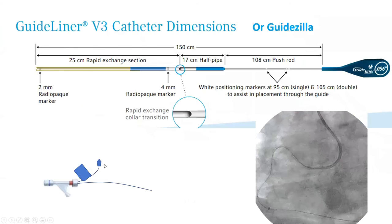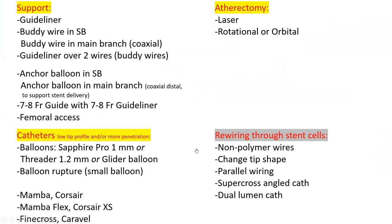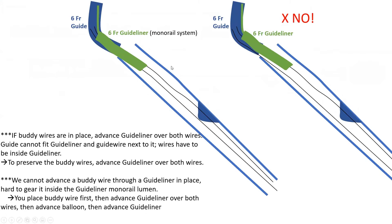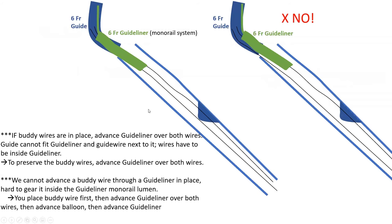Another idea which we used in this case: I advanced my guideliner over two wires. When you have two wires, how do you advance the guideliner? You have to advance the guideliner over both wires at the back end, outside the body. Both wires will come out of the monorail port. You cannot advance the guideliner over just one wire when the other is a body wire — there is not enough room in the six French guideliner between the guideliner and the six French guide to fit that other wire. So you have to advance it over both, or take away the body wire and advance it over one.